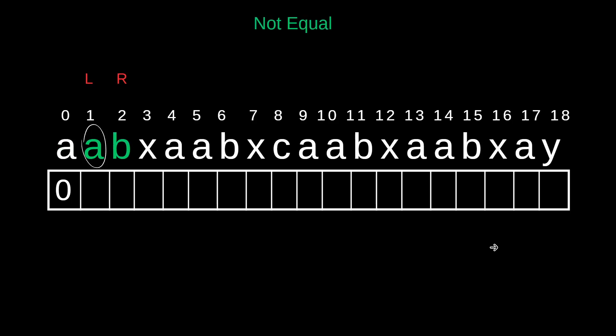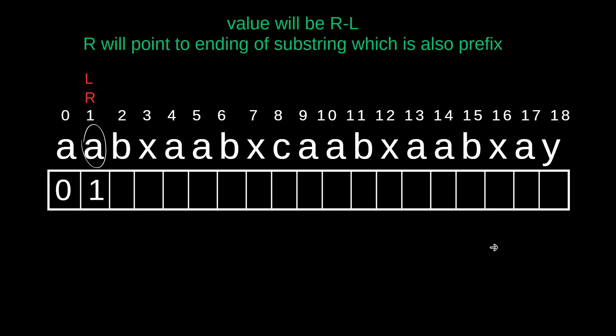Is this value equal? Yes — go to the next value. Now it is not equal, and we have incremented R. The value will be R minus L. R will point to 2, so 2 minus 1 equals 1. R points to the ending of the substring which is also equal to the prefix. So a single 'a' is a prefix which is also equal to the suffix — so we input value 1.